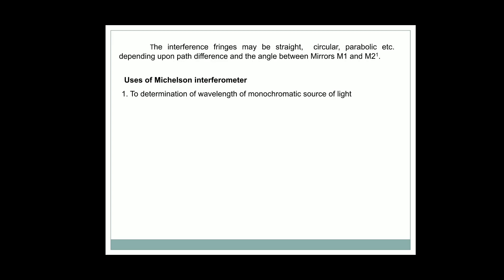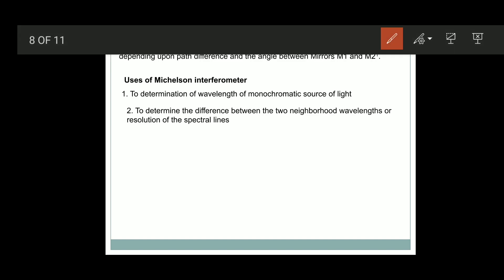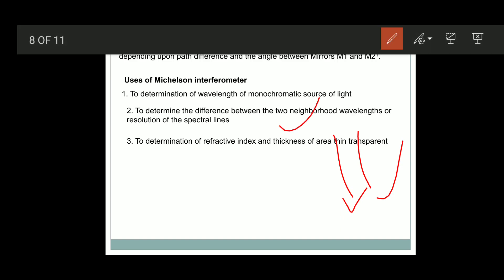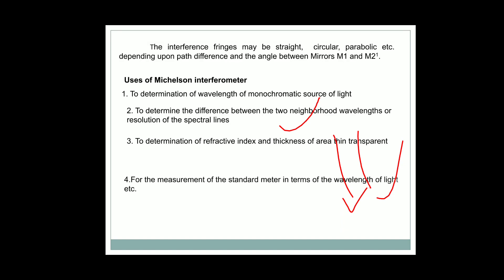What are the uses of the Michelson interferometer? First, we can determine the wavelength of light used — in the case of monochromatic light, a single color. Second, if it is not monochromatic light, we can determine the difference between two wavelengths, that is, the resolution of spectral lines — the distance between two spectral lines, Δλ. Third, we can determine the refractive index of the material of a thin film, and also the thickness of a thin film. Fourth, it can be used to measure the standard meter in terms of the wavelength of light.